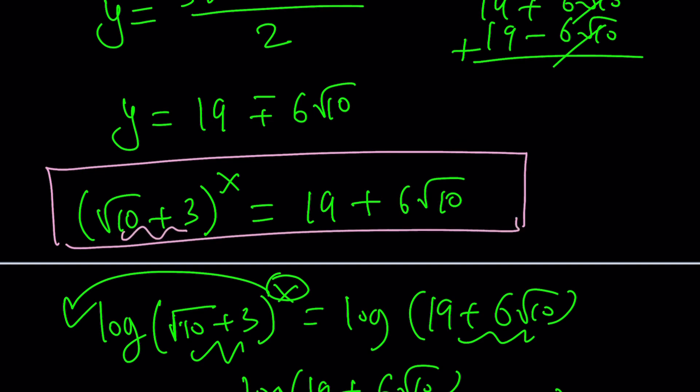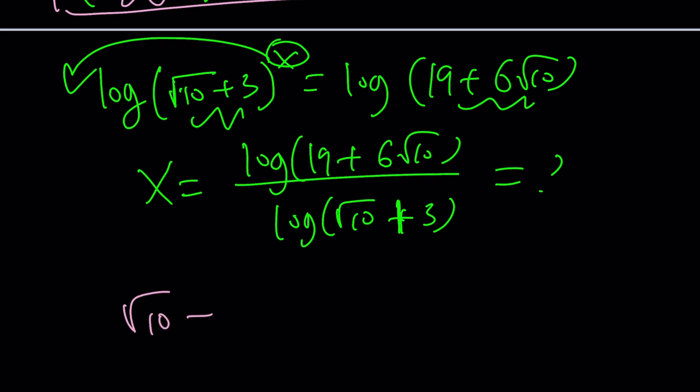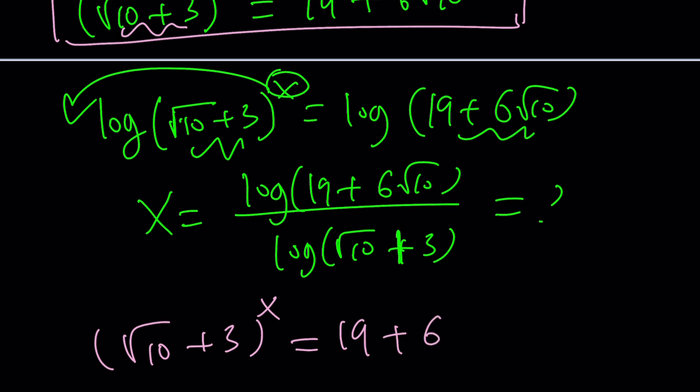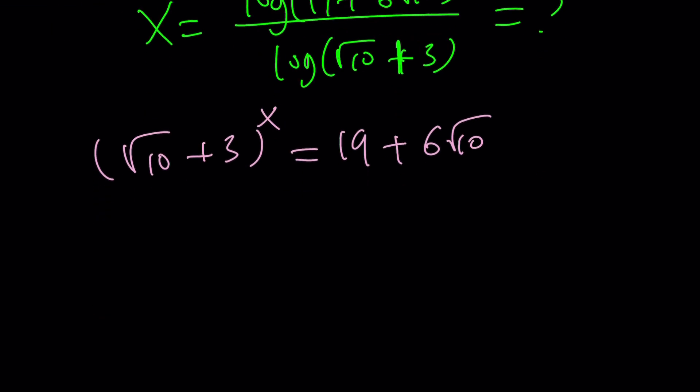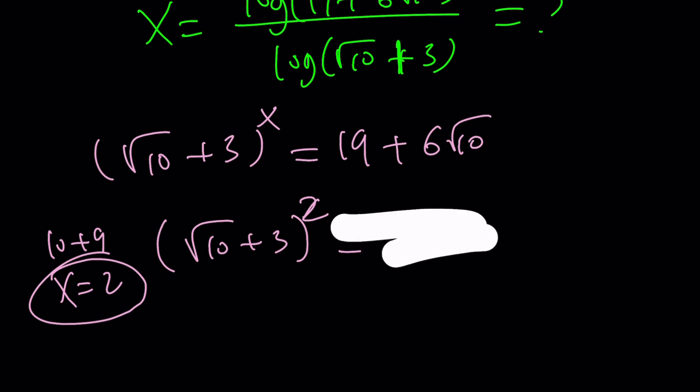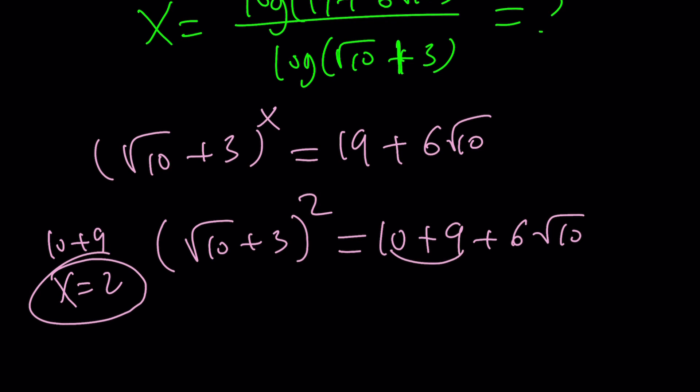Notice that this is greater than 1. So if I can find the x value, it's going to be unique because the left-hand side is increasing, right-hand side is a constant. Does that make sense? We always use that idea. So I'm just going to guess. Given that 19 can be made from 10 plus 9, this tells me x equals 2 seems to work. And it actually does, because if you square this number, then you get this. Think about it. Let's break it down a little bit. So this will be root 10 squared plus 3 squared plus 2ab is going to give you that. This is 19. And bingo, we got it, right? So x equals 2 is a solution.